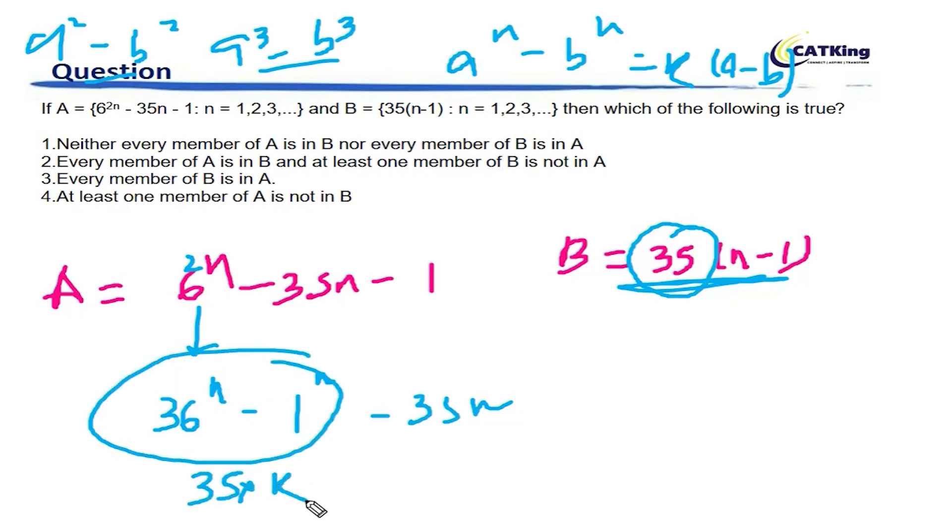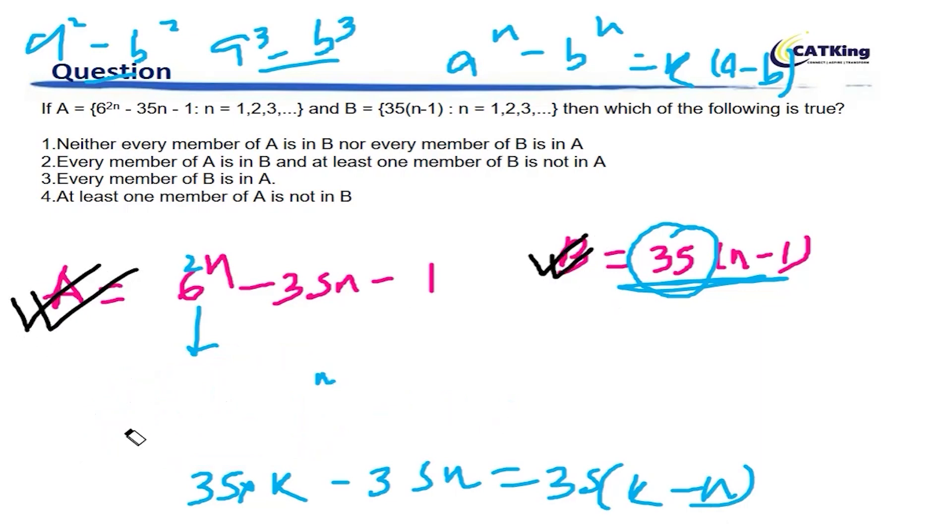This is also a multiple of 35. So we can say this number is 35 times k minus n. So A is a multiple of 35, B is also a multiple of 35. However there is one difference.